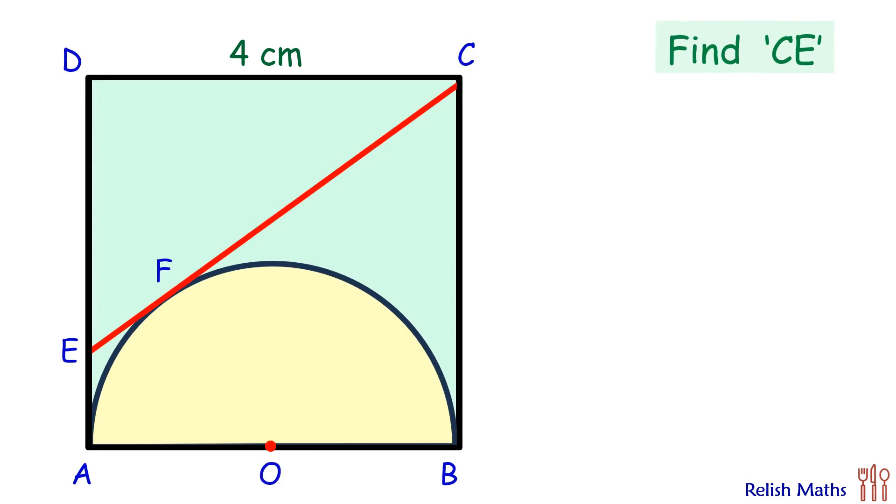Let's check the solution. We know that in a circle, from an external point, the tangents drawn are equal in length. Thus CF and CB, these two tangents, will be equal in length. But CB is the side of the square, which is 4 centimeters. Thus CF will be 4 centimeters.